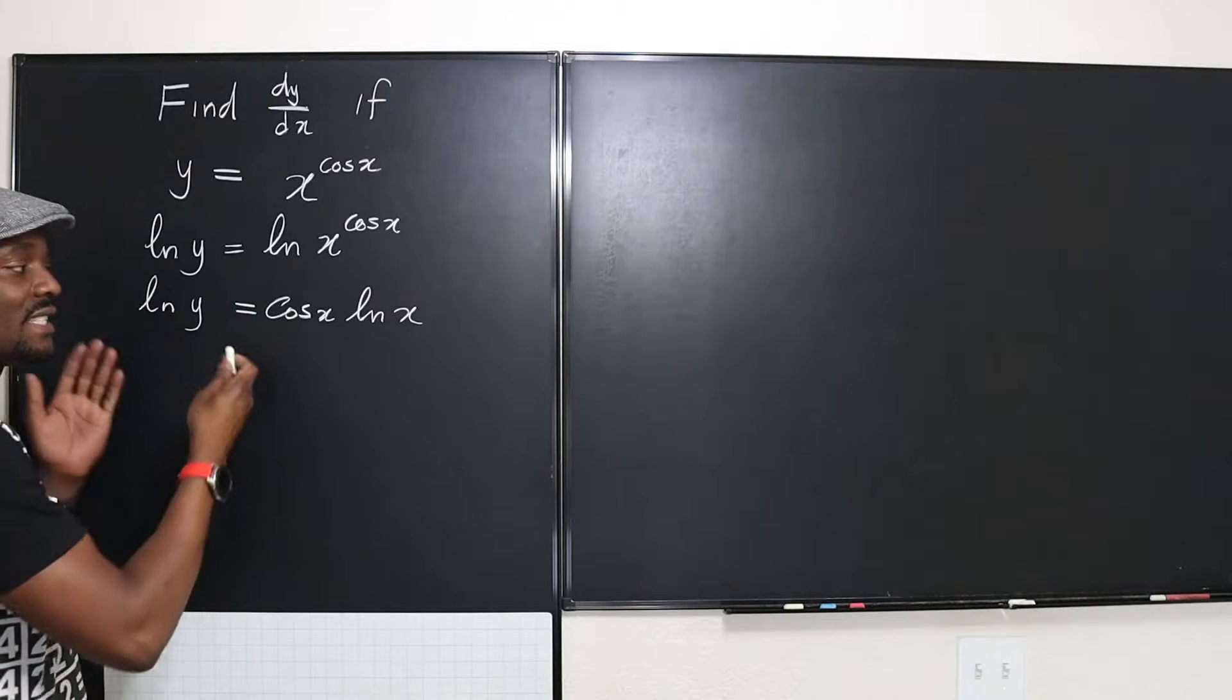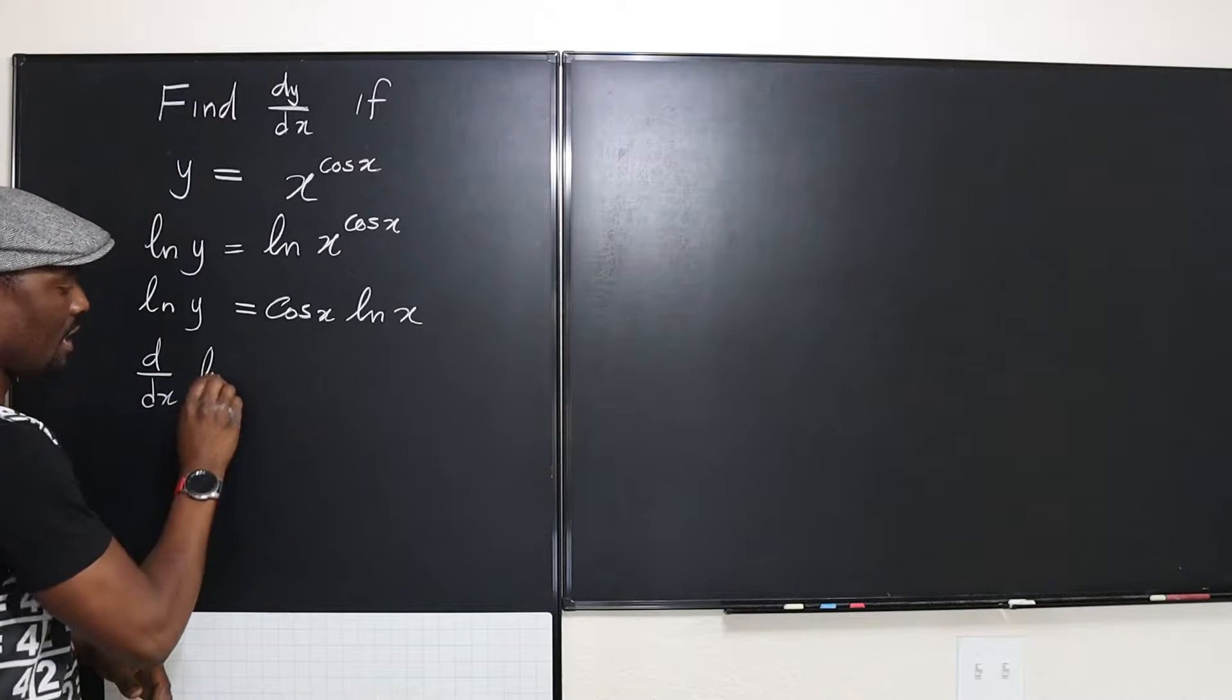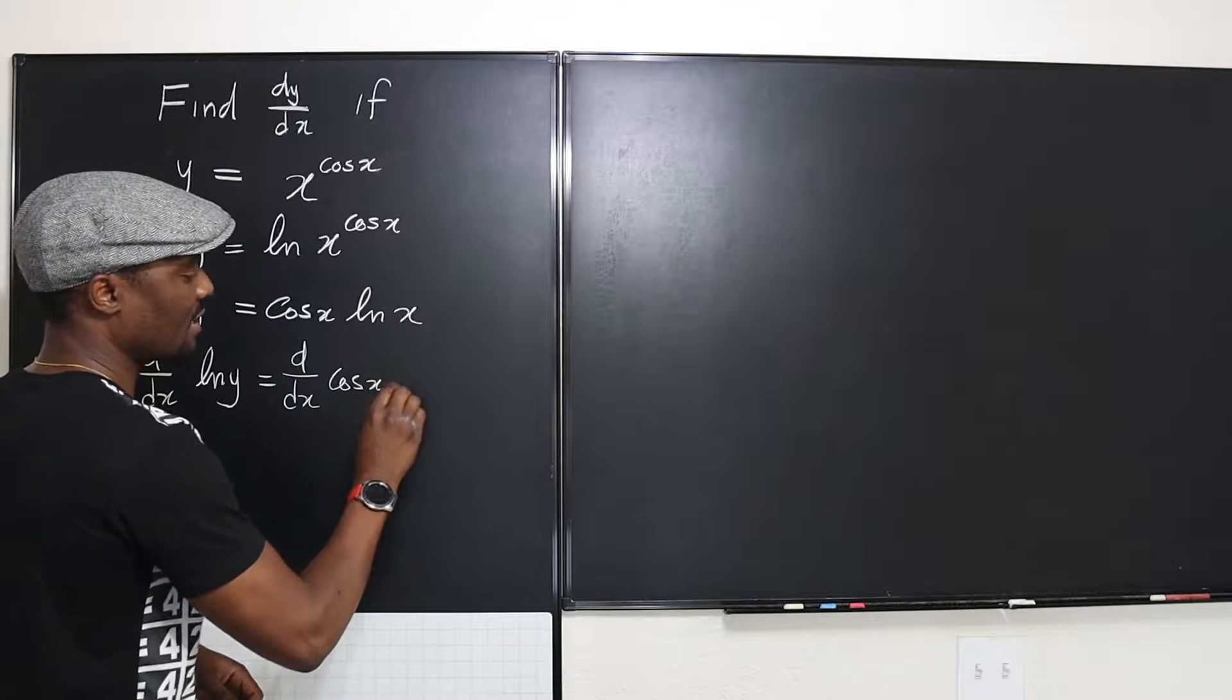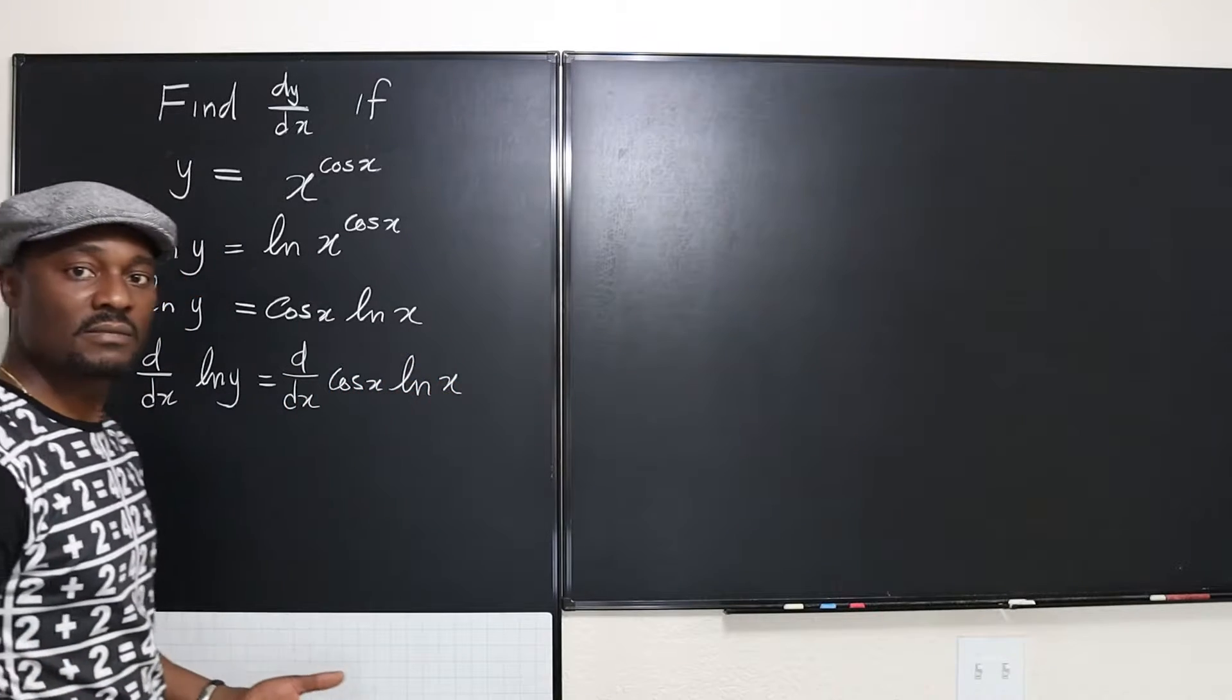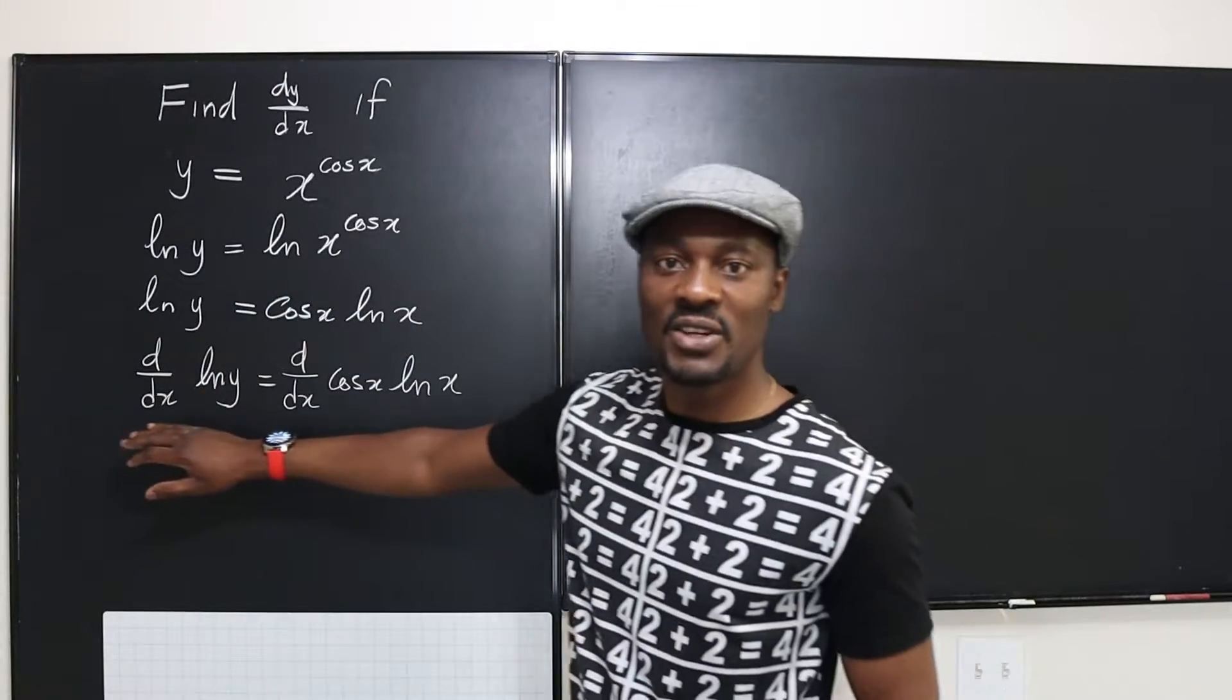So let's write ln of y. Now we can take the derivative of both sides. So we say d/dx of ln of y is equal to d/dx of cosine x natural log of x. So let's differentiate the right-hand side and differentiate the left-hand side.